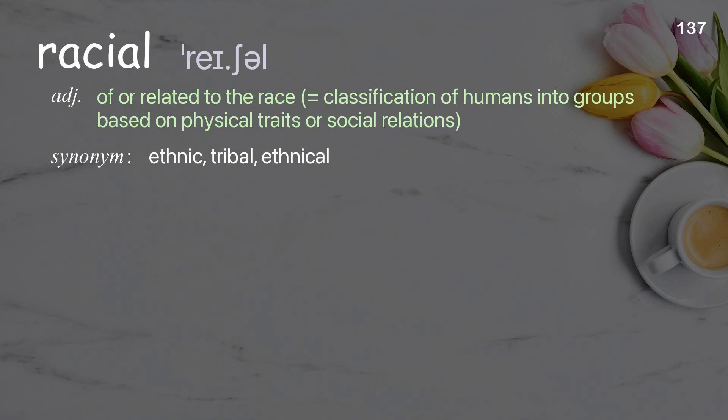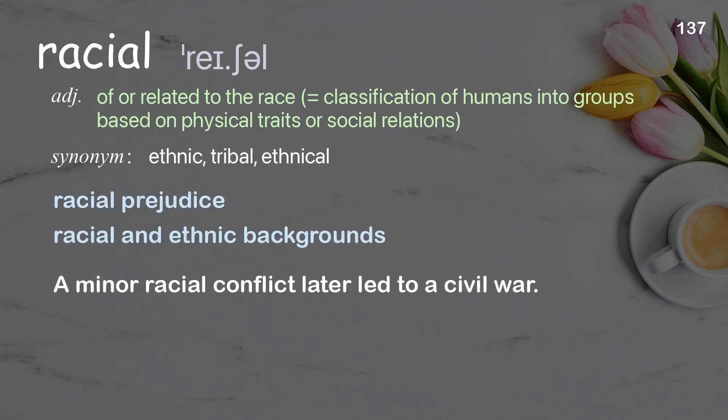Racial: of or related to race; classification of humans into groups based on physical traits or social relations. Examples: racial prejudice, racial and ethnic backgrounds. A minor racial conflict later led to a civil war.